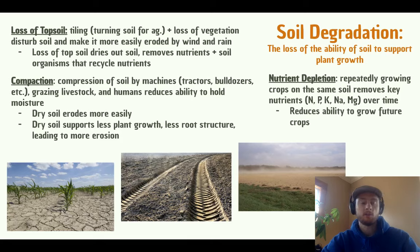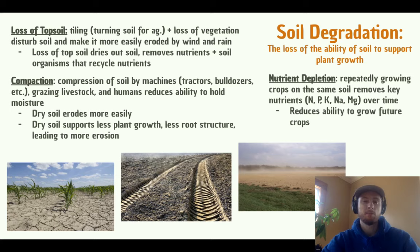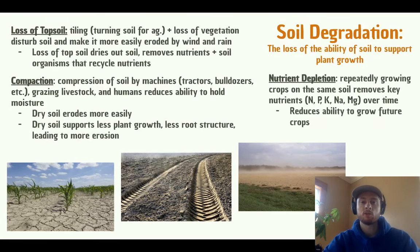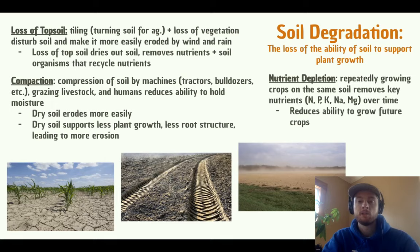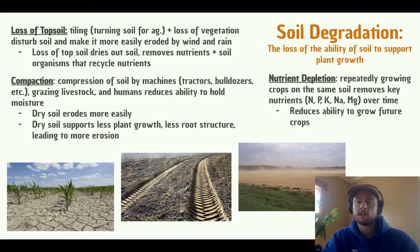Then we have compaction — the compression of soil by machines like tractors or bulldozers, by grazing livestock such as cattle, and even by humans walking in an area. The problem with soil compaction is it forces soil particles closer together, eliminating pore space that is vital for holding water. Think of soil like a sponge — if you squeeze it, it can't hold moisture as well. Dry soil erodes more easily and supports less plant growth. The third way soil is degraded is nutrient depletion — when you repeatedly grow crops on the same soil, each year they remove nutrients, making that soil progressively less productive and less able to support plants.